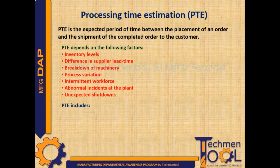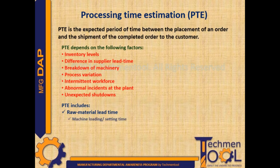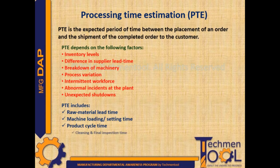It includes raw material lead time, which means the time required to receive the raw material from the supplier, machine loading or setting time, product cycle time, cleaning and final inspection time, and dispatch time.